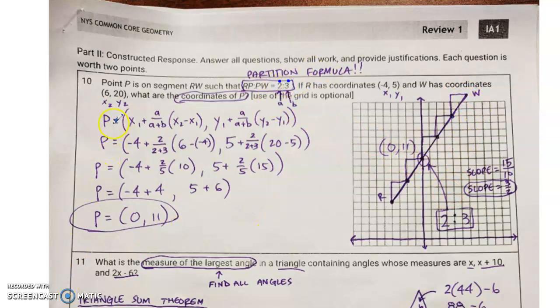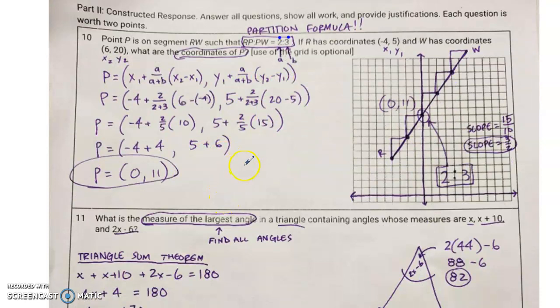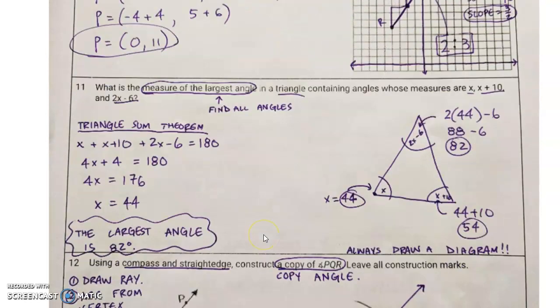If you don't like that method, if you don't like the graphical method, you could use the partition formula, which is very simple, x1 plus a over a plus b, x2 minus x1, and then the same exact thing, except replace all your x's with y's. If you do that, you'll be very wise. These are funny jokes.